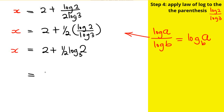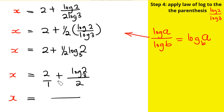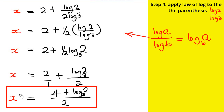This is the same thing as 2 plus log of 2 base 3, all over 2. Writing 2 as 4 over 2 and combining over the common denominator of 2, we get 4 plus log 2 base 3, everything over 2. So x equals (4 + log₃2) / 2. This is the final answer for the value of x.